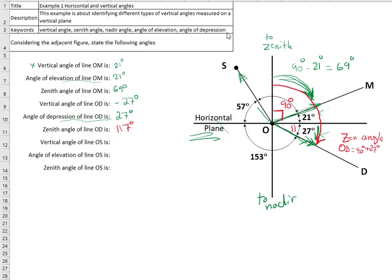The vertical angle of line OS: since this angle is above the horizon, it is 57 degrees. The angle of elevation of line OS is the same as the vertical angle when it is above the horizon, so it is also 57 degrees. The zenith angle of line OS is measured from the zenith direction to the line: 90 minus 57 equals 33 degrees.